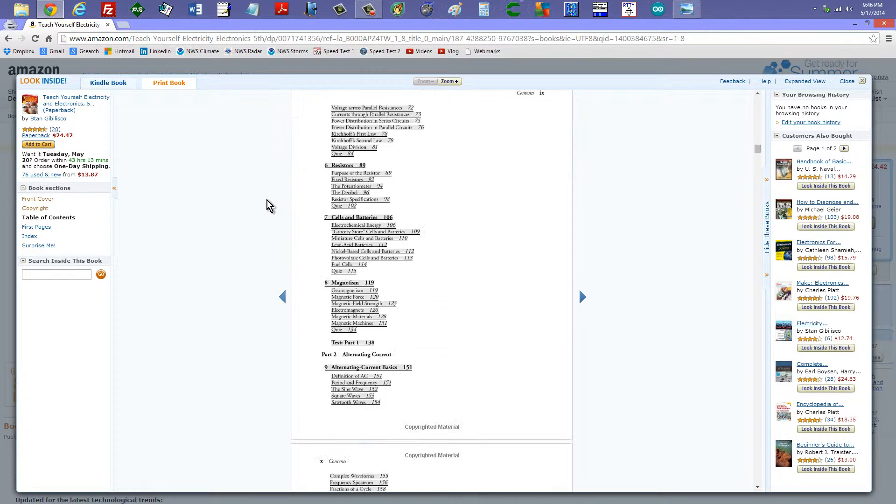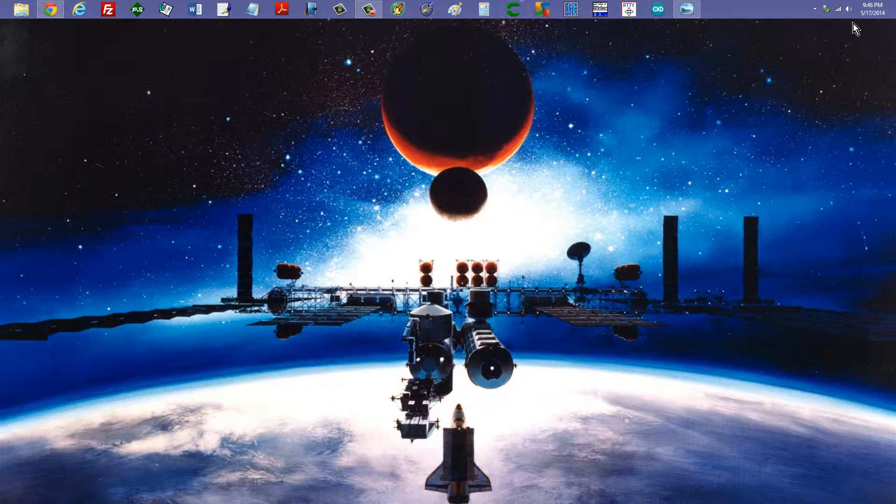And here is chapter 9, Alternating Current Basics, and that is the chapter that we will look at now after we make another brief foray into outer space.